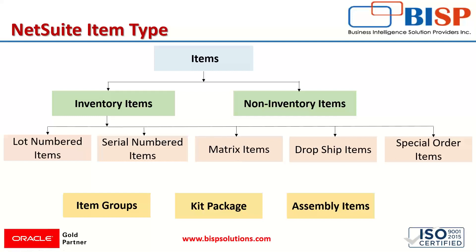The other category is drop ship items. Under drop ship items, the items are sent directly from our vendor to the customer. These items are not recorded into our inventory as they have no impact on our stock. The supply of goods is made directly from the vendor to the customer, so there is no recording of these items into our inventory.